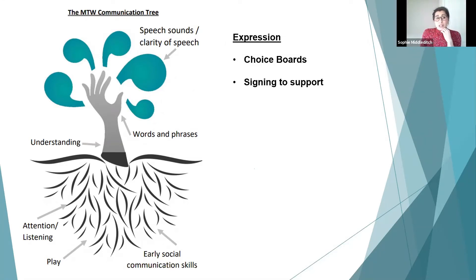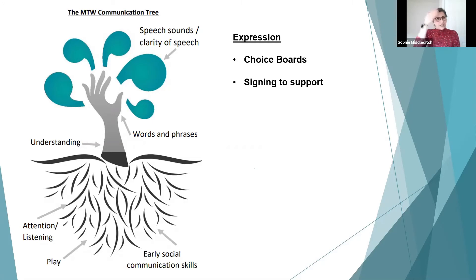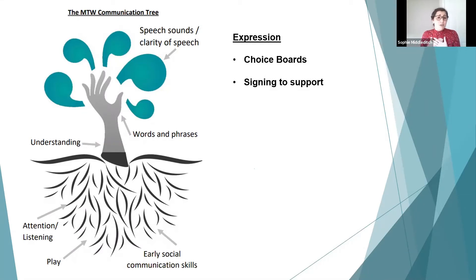Signing can also support expression — and understanding too, because a sign provides a visual to hold on to. A verbal instruction disappears the second you've said it, but children who are visual learners can really benefit from a sign. For example, the sign for 'want' — doing the action — means they know to use that first: 'want bubbles,' and that helps them expand what they're saying and encourages communication to come forward.